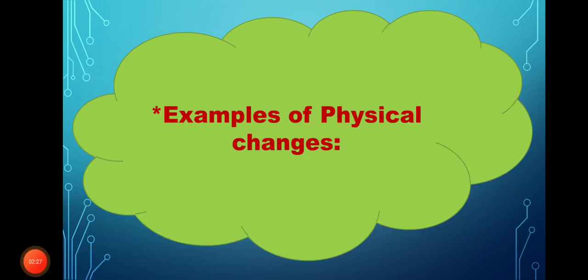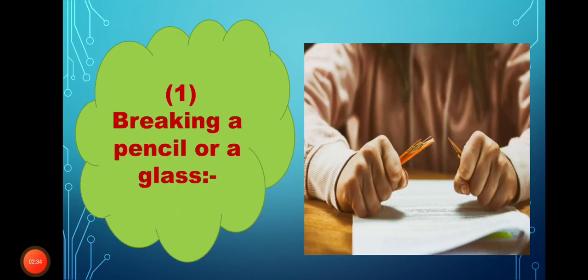Let's see some examples of physical changes. Breaking down a pencil or a glass — when I break down the pencil, its component inside doesn't change. It doesn't become a desk or a table. Its component doesn't change, and we can restore the pencil or the glass again — we can fix it again. So, breaking down a pencil or a glass is considered a physical change.